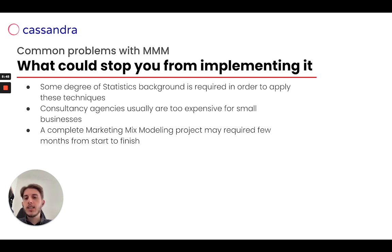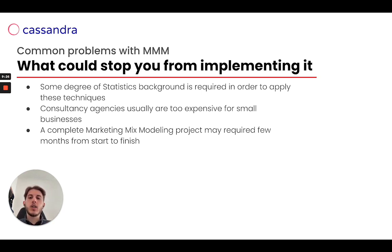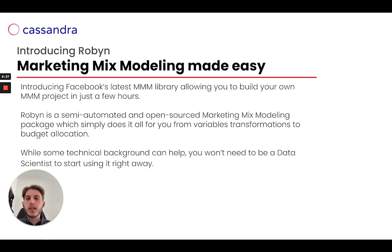On the other hand, if we decide to go with consultancy agencies, they are usually expensive — maybe too expensive for small businesses. And a complete marketing mix modeling project may require even a few months from start to finish: from deciding to do MMM, getting the data, understanding which data we need, doing transformations and modeling, to analysis. That can really be a long project. However, Facebook came to help with a really smart solution, which is Robyn — Facebook's latest MMM library, allowing you to build your own MMM project even in just a few hours.